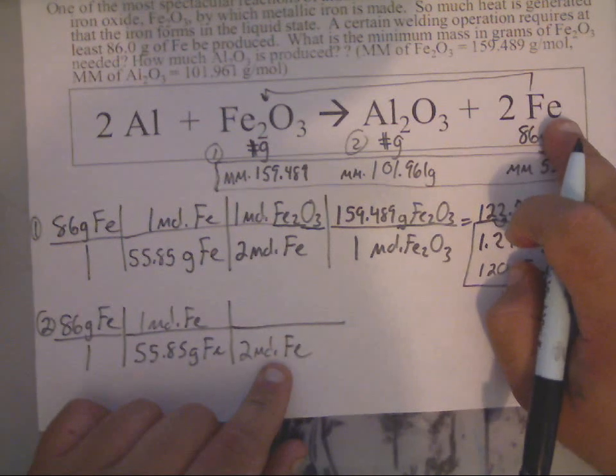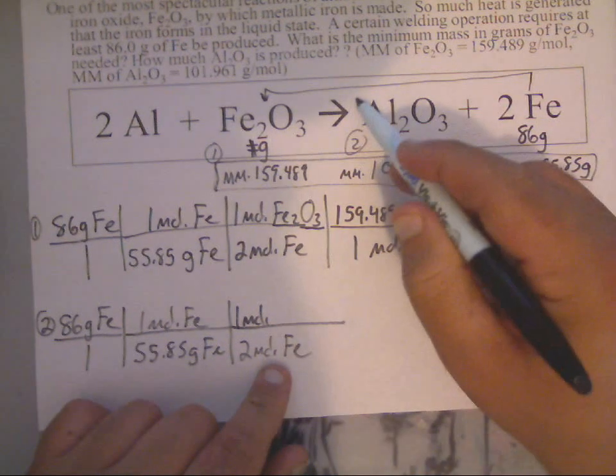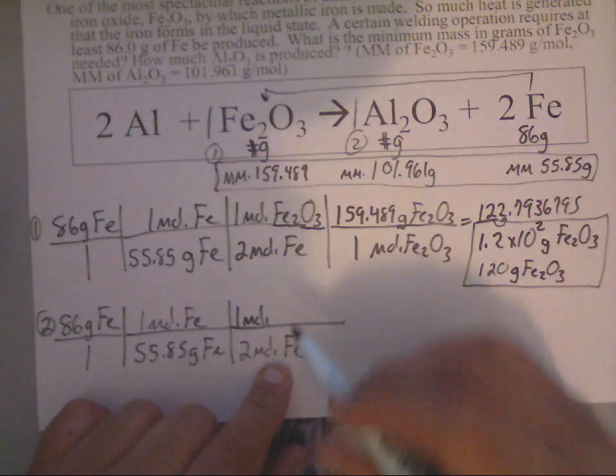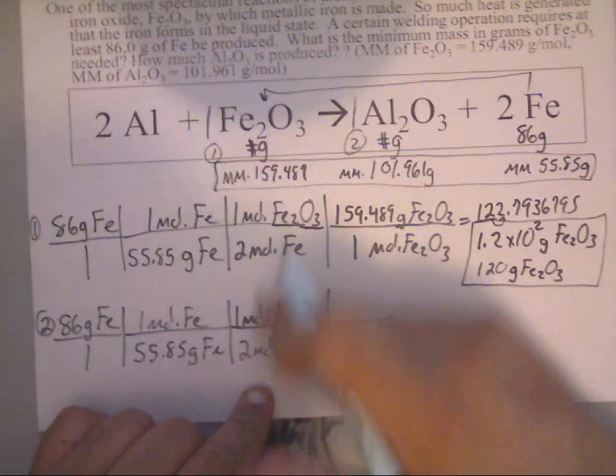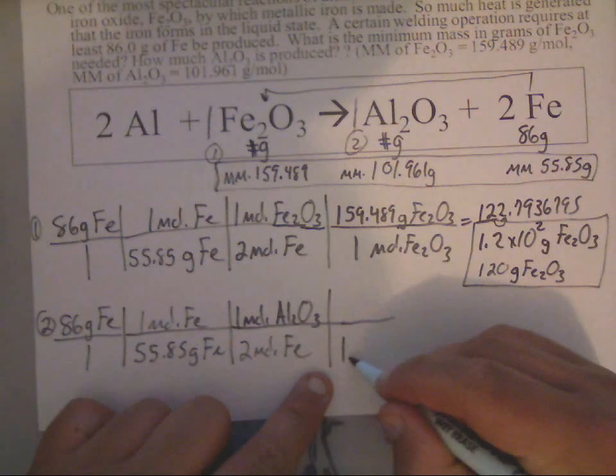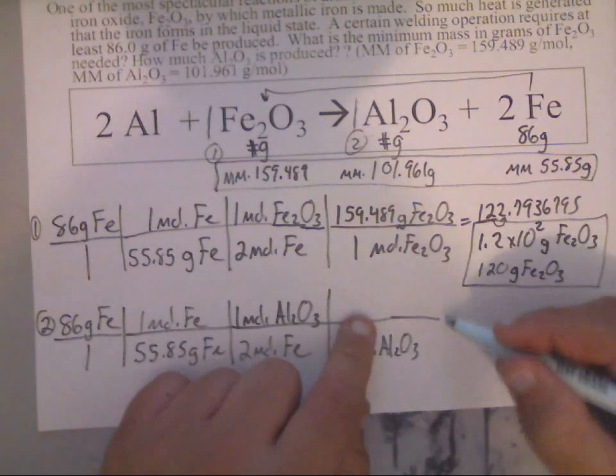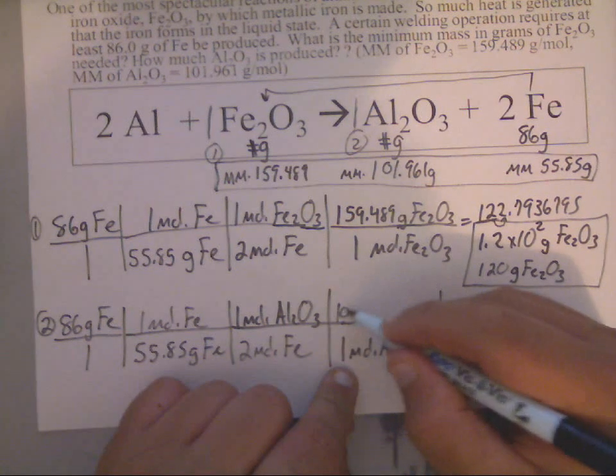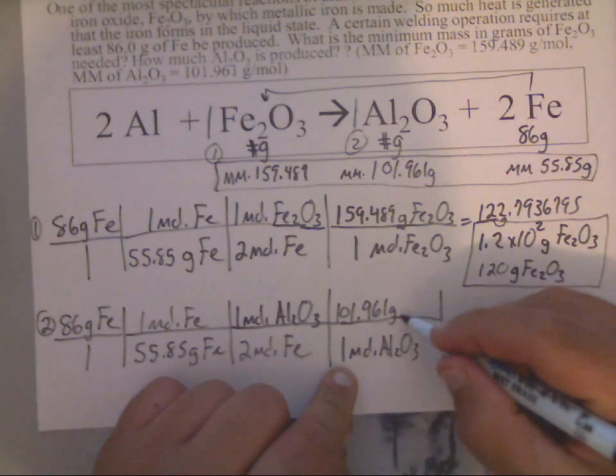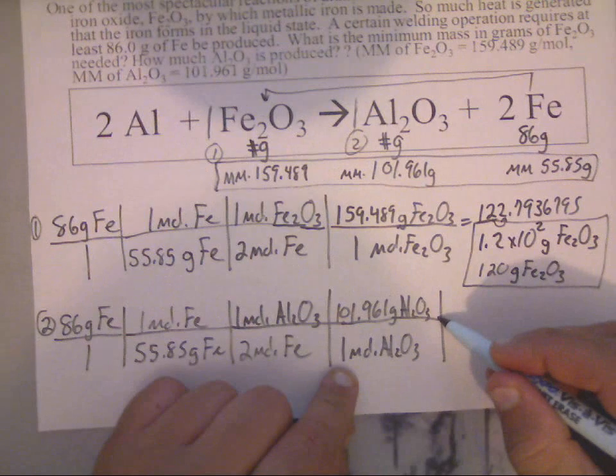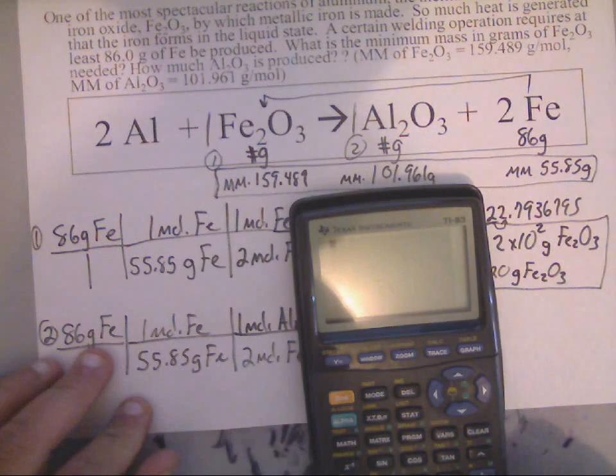Now this is where it changes. We're talking about moles of Fe, and now we're talking about this. That's going to be one mole, so there's a one right there, just like there was a one here. So that's one mole of Al2O3. After the molar ratio, you will always go back to writing one again. So that's one mole of Al2O3. Now you need the molar mass up here. The molar mass of Al2O3 is 101.961 grams of Al2O3, and that's aluminum oxide.